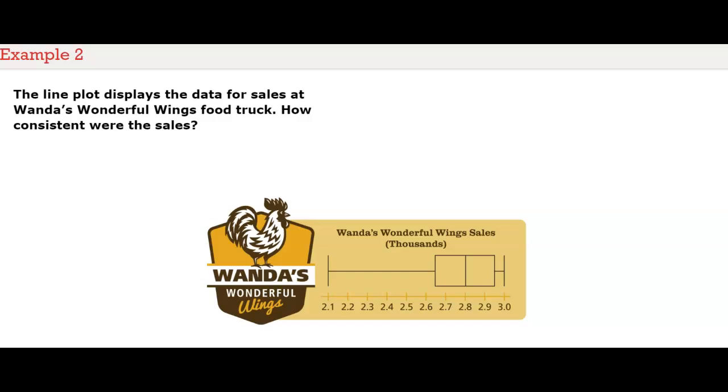The line plot displays the data for sales at Wanda's Wonderful Wings food truck. How consistent were the sales?